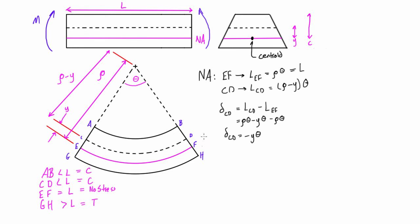We could have placed CD anywhere — above or below the neutral axis. If we define positive y as going upward (radially inward) from the neutral axis, then above the neutral axis y is positive, returning a negative deformation, which means compression. Below the neutral axis y is negative, giving a positive deformation indicating tension. That sign convention makes physical sense.